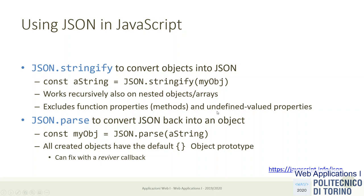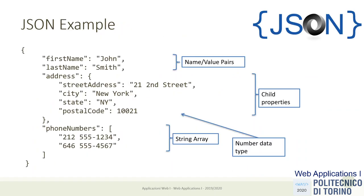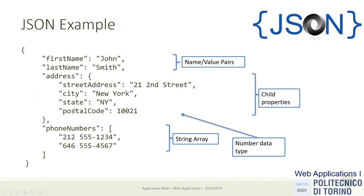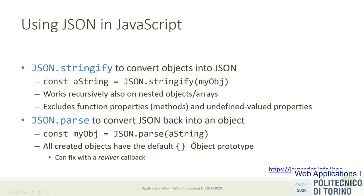Properties with undefined values will also not be serialized — only those properties that have a value that is not a function. The reverse is implemented by JSON.parse, which takes a string and creates an object reflecting that same information. It will reconstruct a real JavaScript object from the text string that was the JSON representation. So JSON is a serial representation for objects.